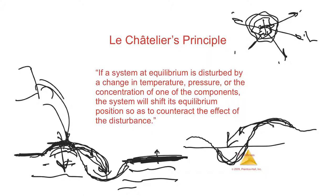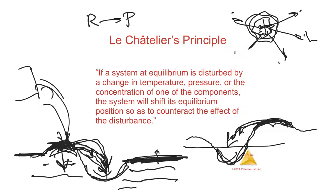If I add some stuff to the left, that is going to make it shift to the right. Remember, right is more products, left is more reactants. So if I am adding stuff on the left, it's going to move towards the right to lessen the effect of that disturbance. If I add some products, it's going to shift to the left. If I take away some reactants, it's going to shift to the left. If I add some reactants, it'll shift to the right. If I take away some products, it's going to shift to the right. This is going to happen in terms of concentration.